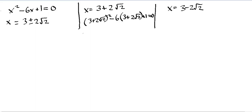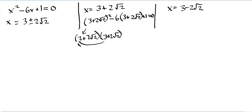Three plus two times the square root of two, squared, means we're going to use the FOIL method — First, Outside, Inside, Last — multiplying four times. So let's write out the expression: three plus two times the square root of two, times three plus two times the square root of two. The FOIL method says we multiply the firsts first: three times three is nine. Then the outsides: three times two times the square root of two — both positive — gives us plus six times the square root of two.